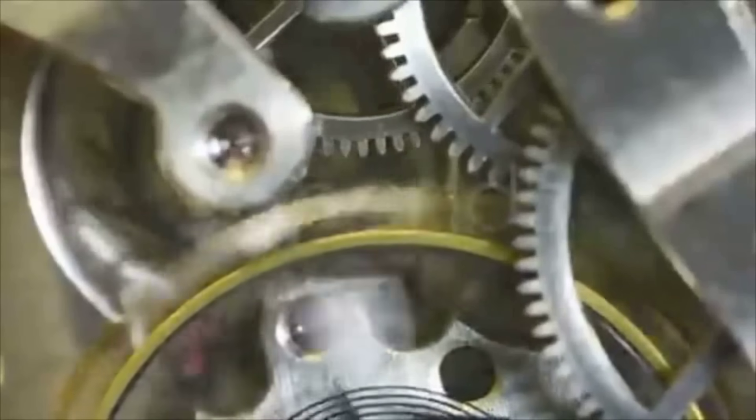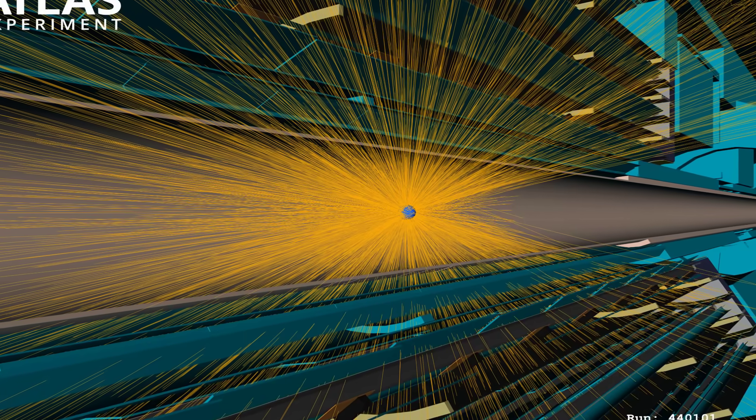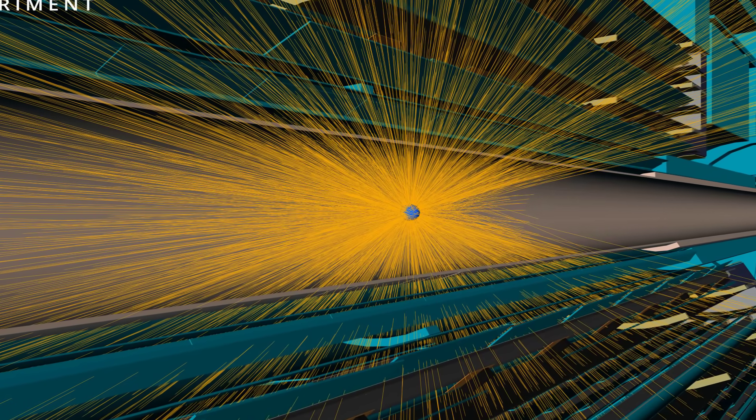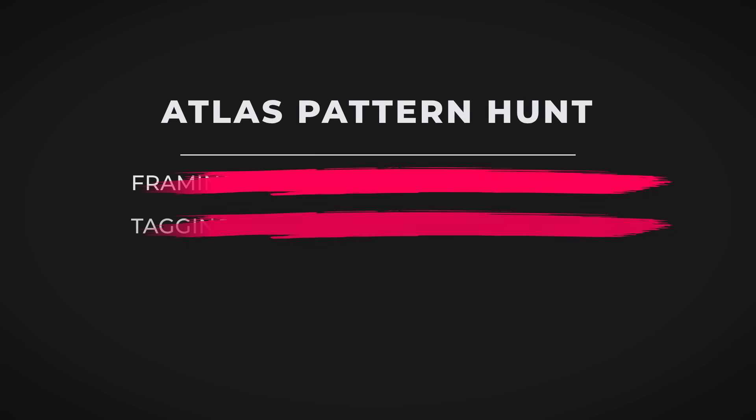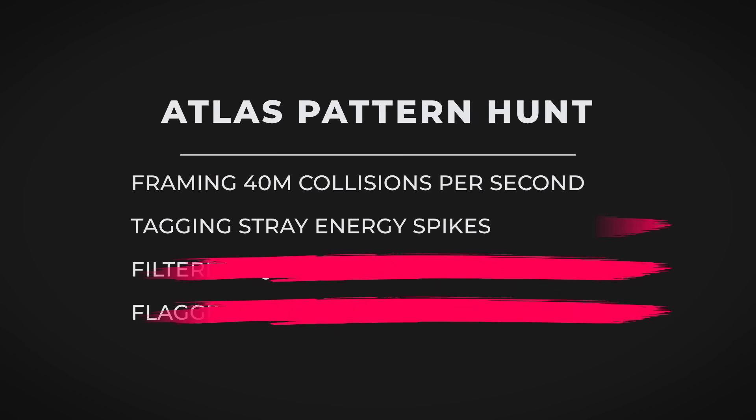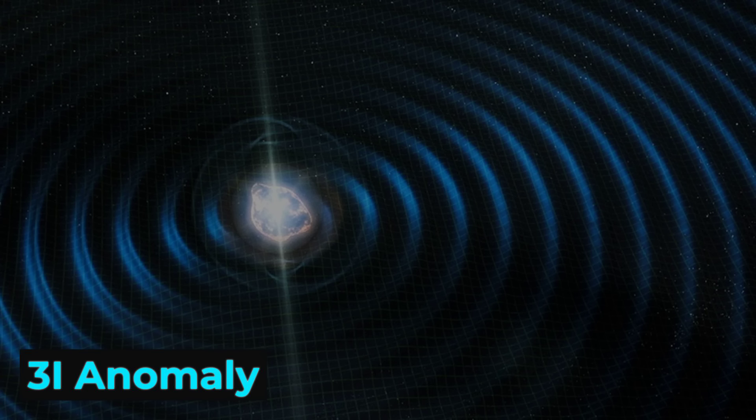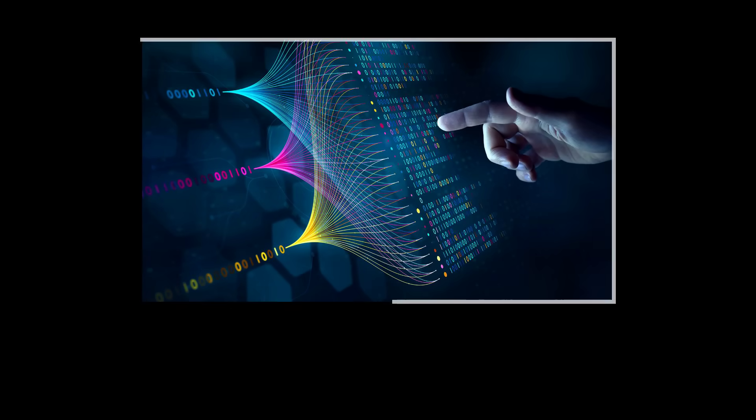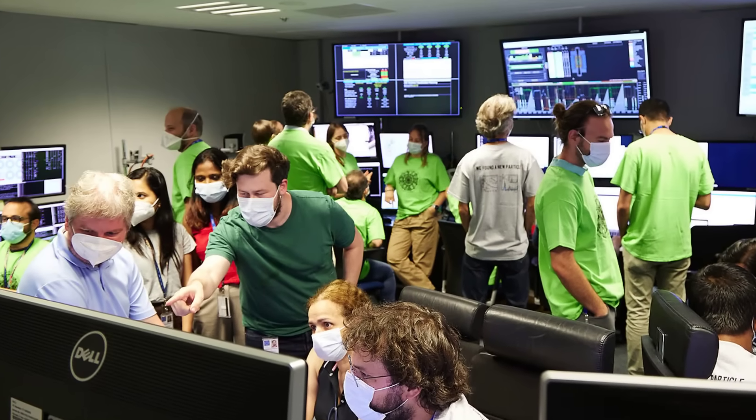Every collision inside ATLAS is like smashing two intricate watches together, then trying to reconstruct not just the gears but the laws that govern time itself. The detector's sensors and algorithms sift through these fragments, searching for patterns that don't belong, signals that might hint at new forces, hidden particles, or cracks in the structure of reality. When the 3i anomaly appeared, it was this colossal machine that caught its fleeting trace, translating a momentary ripple in the quantum fabric into a string of numbers that would unsettle the world's leading physicists.